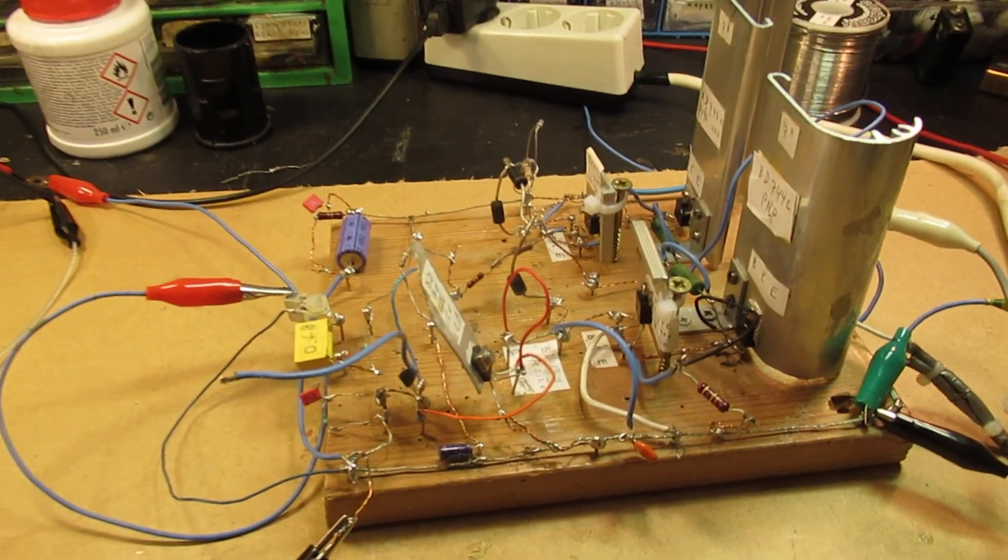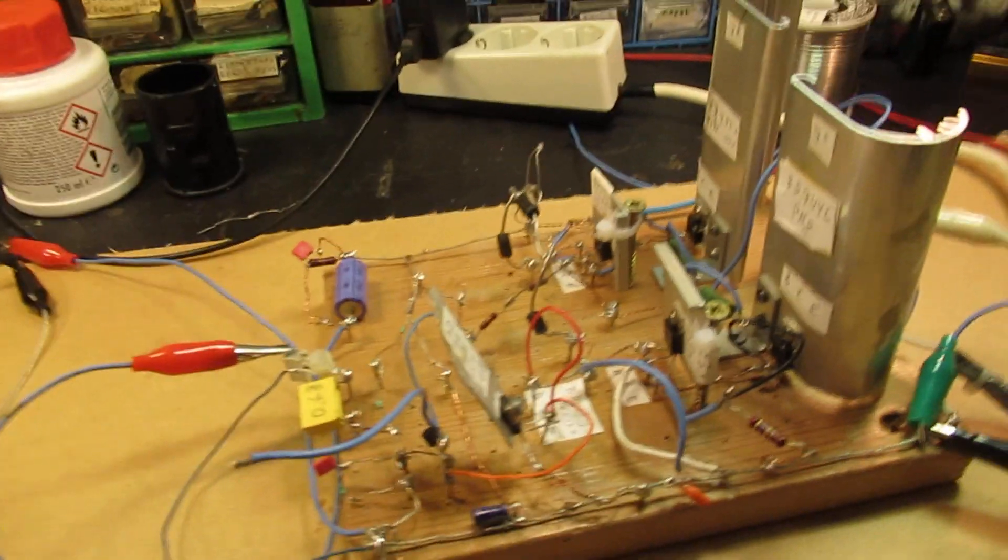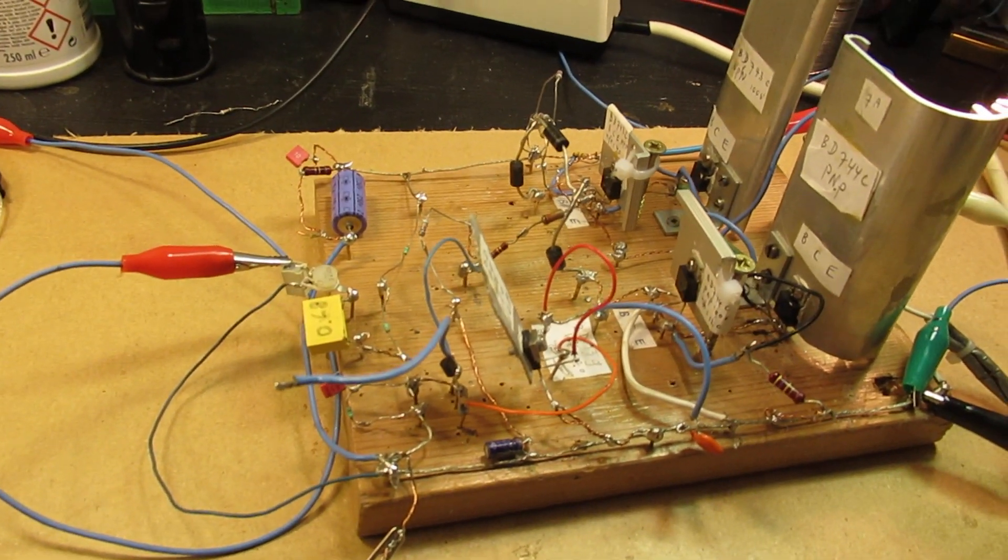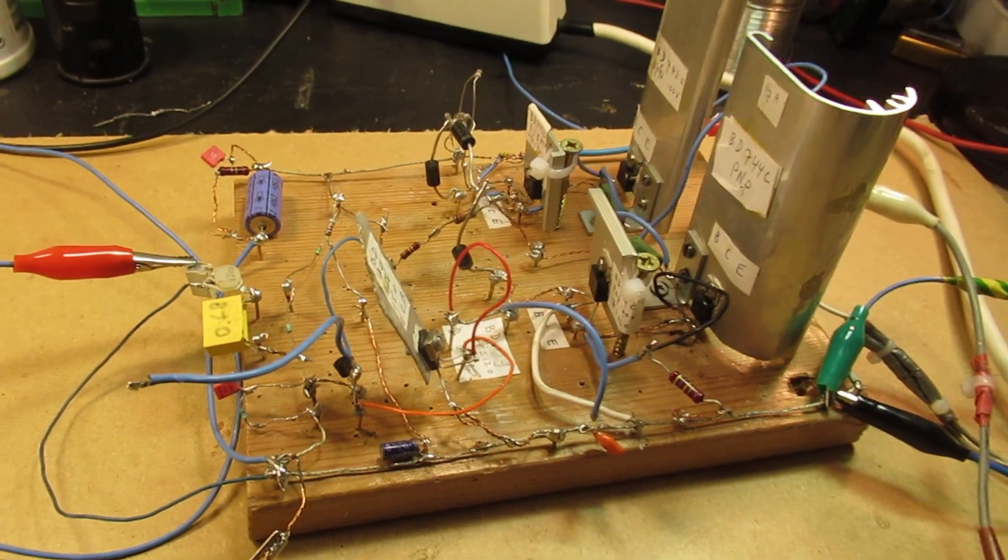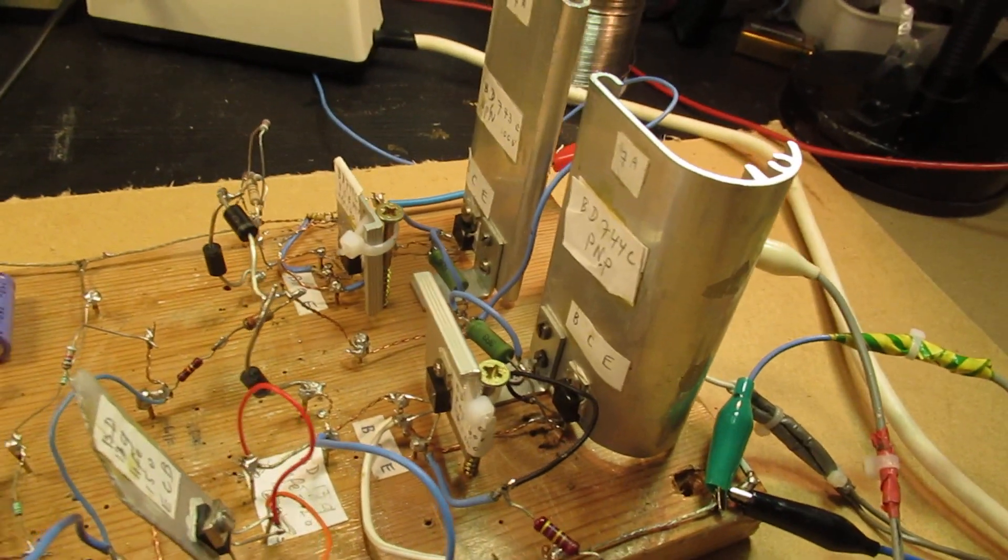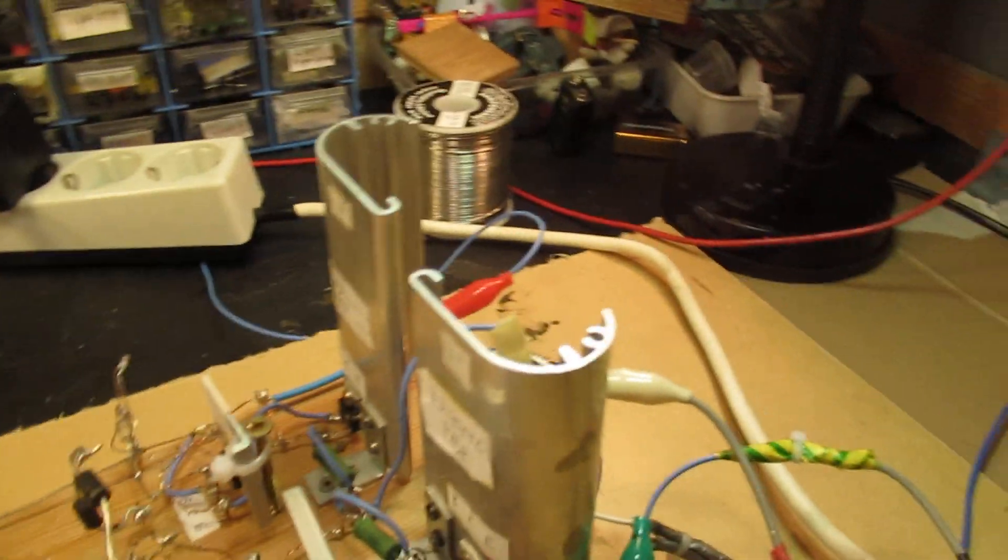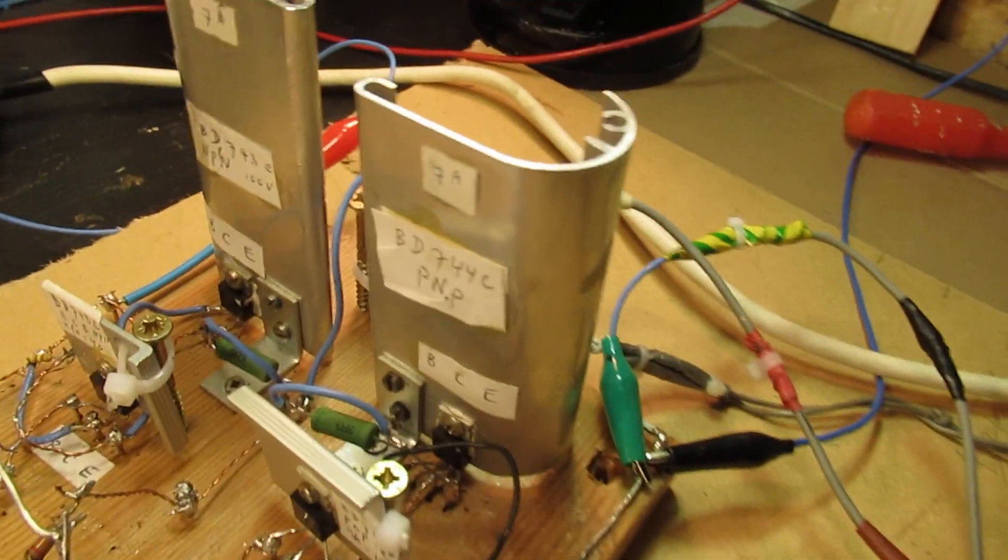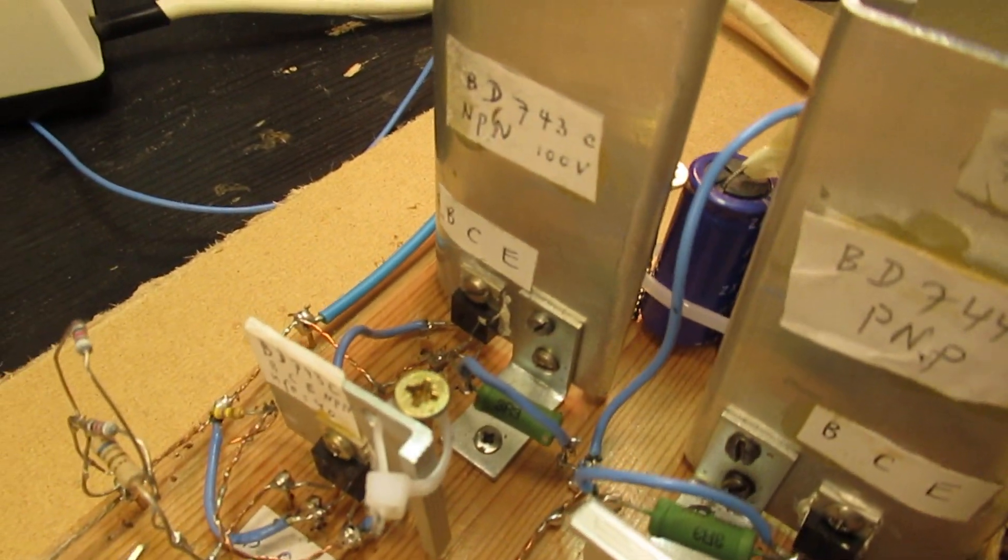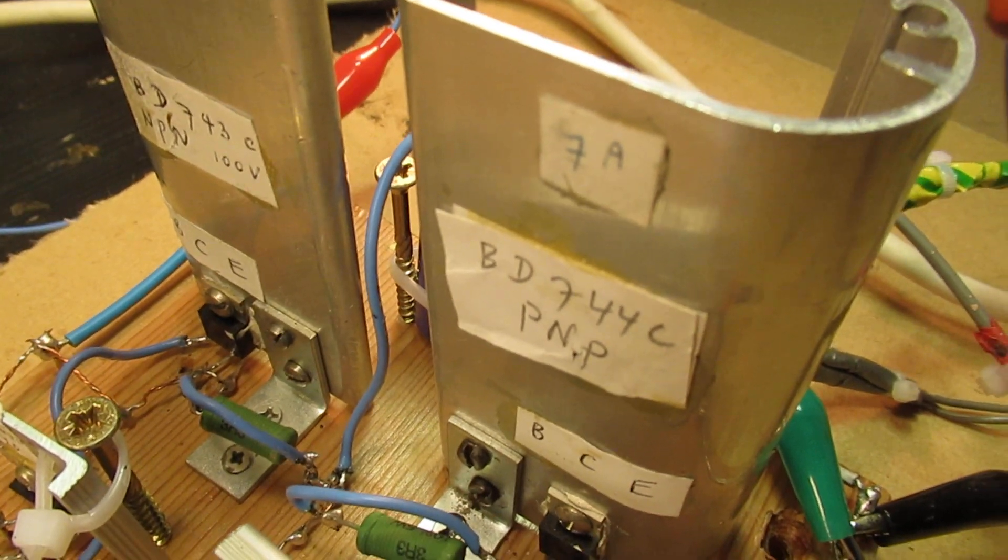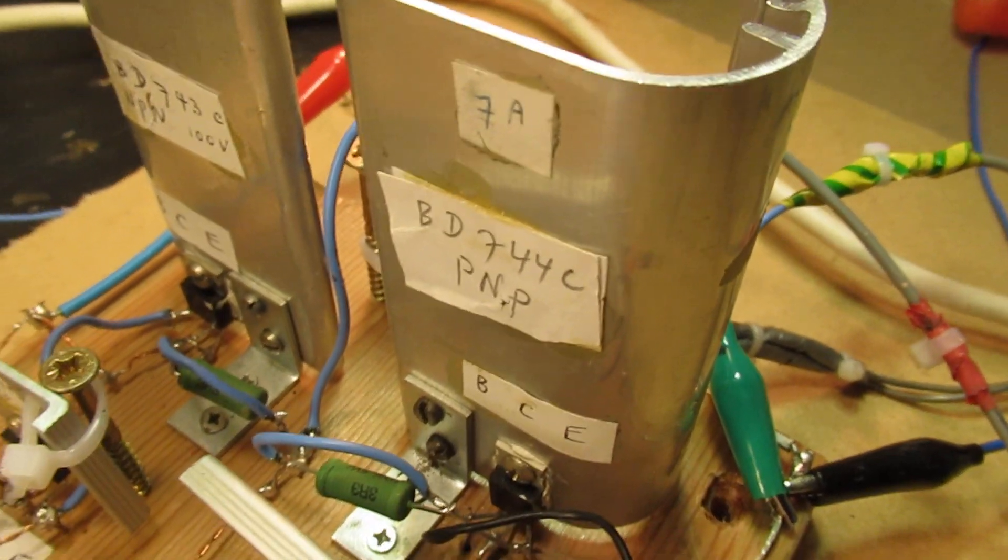I published this circuit quite a long time ago and I will surely give the link in the description. It was an audio amplifier, completely classical by the way, made with a BD743 NPM and a BD744C PMP.